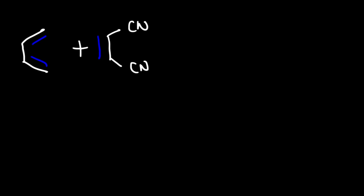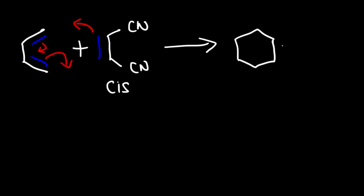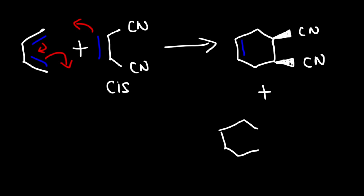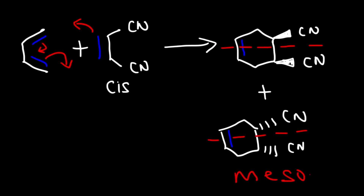Now let's react 1,3-butadiene with a cis alkene as our dienophile. The mechanism is the same and we still get a six-carbon ring, but notice that the CN groups are on the same side. When we draw the final product they should still be cis with respect to each other. We can draw the final product in two ways, and in fact these two products are identical — there is an internal plane of symmetry, so they are meso compounds. In this reaction we only get one product.